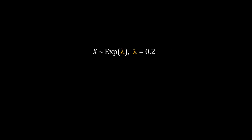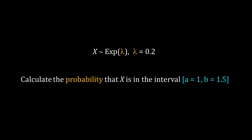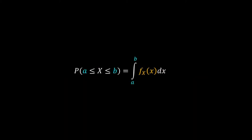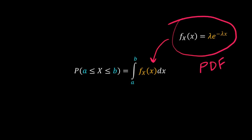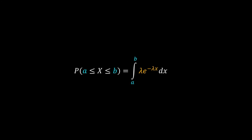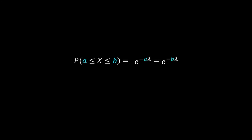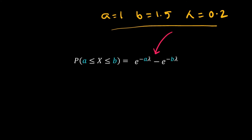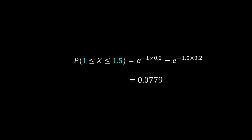Take a simple numerical problem: X follows an exponential distribution with λ = 0.2. What is the probability of X lying in the interval 1 to 1.5? We use the definition of the PDF, replace f(x) by the PDF of the exponential distribution, and integrate from a to b. We get the probability equal to e^(−aλ) − e^(−bλ). Plugging in the numerical values, the probability that X is between 1 and 1.5 is 0.0779.